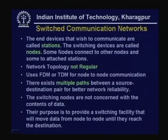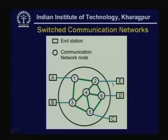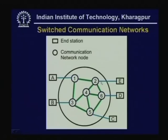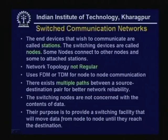There exist multiple paths between a source–destination pair for better network reliability. For example, if A wants to communicate with C, it can communicate through nodes 1, 3, and 5. But if one link or node is down, A can communicate through nodes 1, 2, 6, and 4, or through 1, 2, 4, 5. Several alternative routes increase the reliability of the network — that is one key objective of the switched communication network.